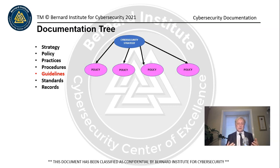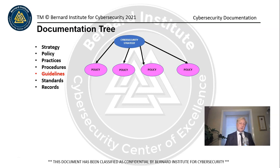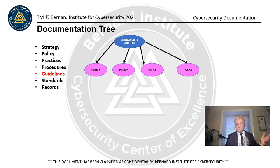In support of the strategy or the program, we have a number of policies. We may have policies that address access control or backup systems or maybe how we use human resource information — types of policies that talk about the handling of information within the cybersecurity program. Policies are probably the highest level of control. They're generally approved by the governance committee who manages the program from an enterprise or executive level, providing a steering committee of sorts. The policies are very high level in nature — things like 'employees will protect information' — very general, but they do address a particular type of risk.